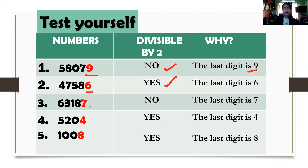How about number 3? Is the last digit an even number? No, it is an odd number. The answer is correct. How about number 4? The last digit is 4. This is an even number, so this is divisible by 2. Your answer is correct. And for number 5, the last digit is 8 — correct, it is divisible by 2. Very good.